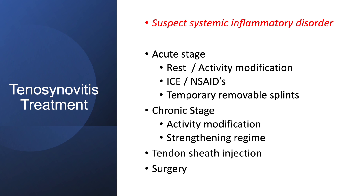Tenosynovitis treatment is the same regardless of which tendon is involved. In the acute stages: rest or modify activities, ice, non-steroidal gel or oral medication if needed, and temporary removable splints. As it starts to improve, it's activity modification, and you can begin a strengthening regime as per any tendinopathy. Additional options include tendon sheath injection and potential surgery if required.